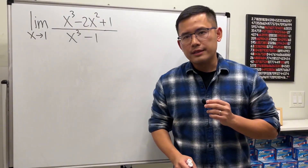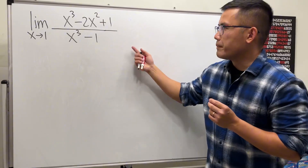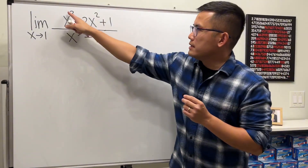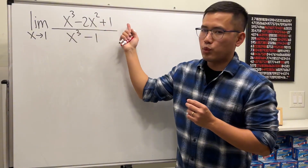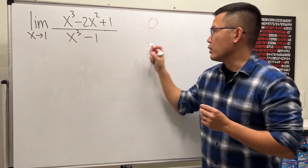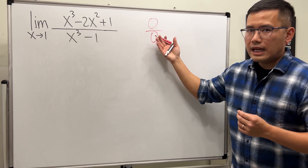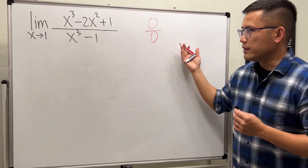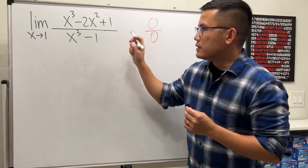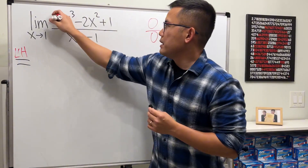In this calculus tutorial I will show you how to use L'Hôpital's Rule to evaluate limits. For the first example, notice when we plug in one into all the x's on the top, we get one minus two plus one, which is zero. When we plug in one on the bottom, one minus one, we also get zero. We must have either zero over zero or infinity over infinity in order to use L'Hôpital's Rule, and this satisfies that criteria.